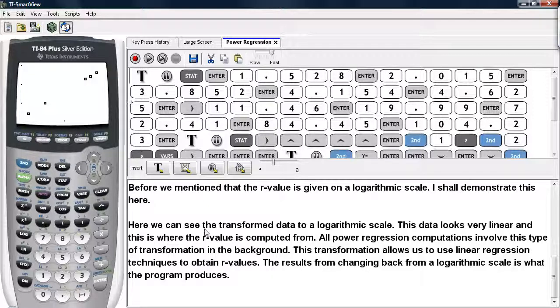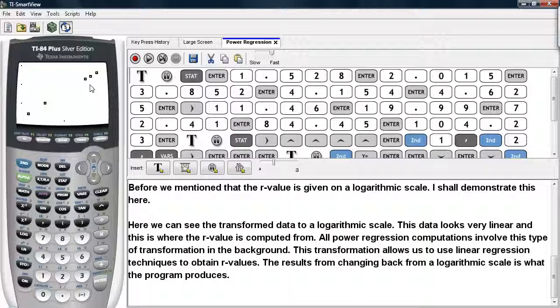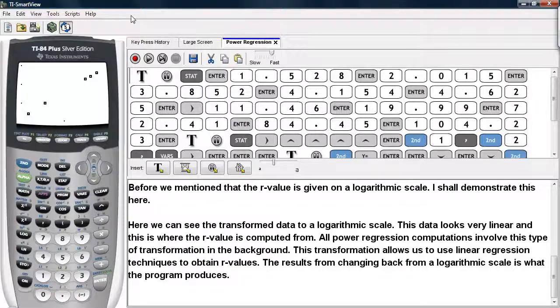So here we can see the transformed data to a logarithmic scale. That's what's going on here. This data looks very linear and this is where the R value is computed from. All power regression computations involve this type of transformation in the background. This transformation allows us to use linear regression techniques to obtain these R values. The results from changing back from a logarithmic scale is what the program produces. And this is how you can do a power regression on the TI-83/84 calculators.